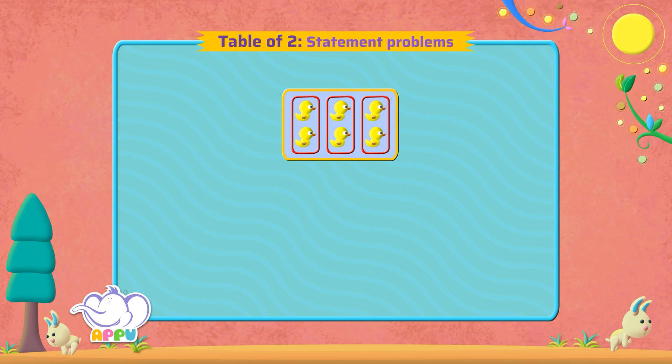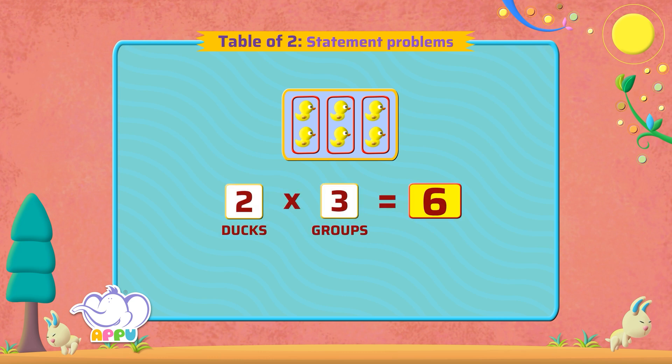To find the total number of ducks, we multiply. Two times three equals six. There are six ducks in all.